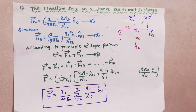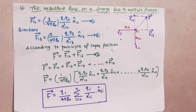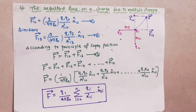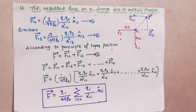Next part of the topic is the resultant force on a charge due to multiple charges. From using the superposition principle, now I have to find the resultant force. In the last class I discussed Coulomb's law in electrostatics. The mathematical expression of Coulomb's law in electrostatics is: vector F is equal to 1 over 4πε₀ times q1 q2 divided by r squared, into unit vector r-hat.